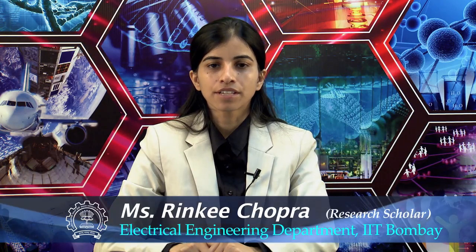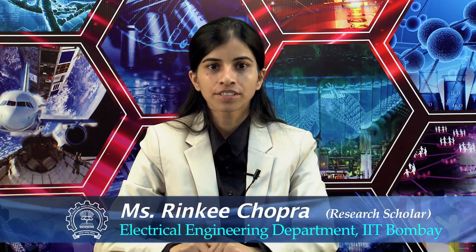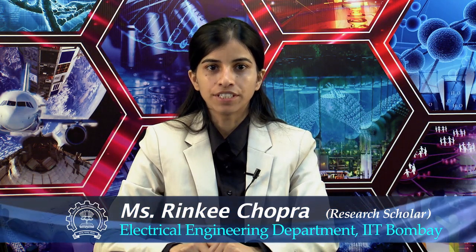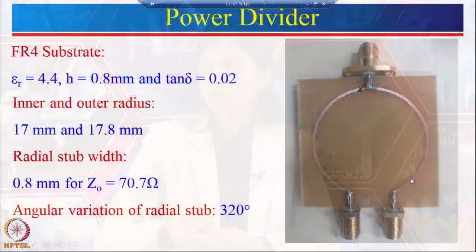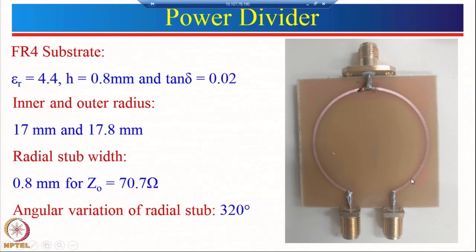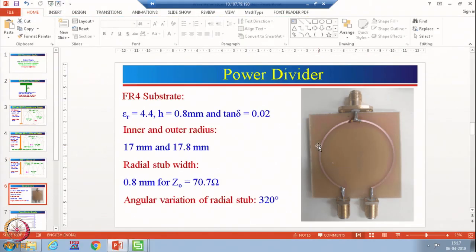Hello. In the last lecture we tried to design microstrip band pass filter and band reject filter. Then we saw how to do the parametric analysis if we want to change a particular parameter. After that we tried to design a two-way equal power divider. This is the geometry of two-way equal power divider, which we tried to design in CST Microwave Studio on FR4 substrate and then we saw the simulated results.